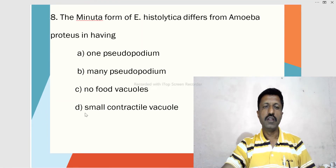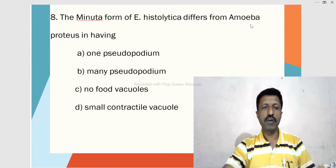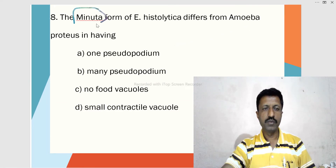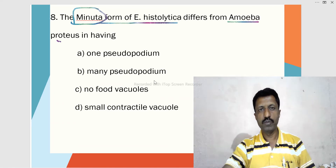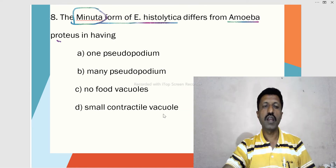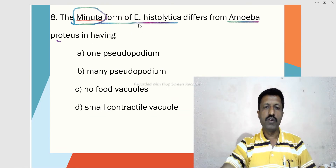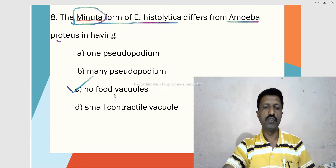Eighth MCQ: The minuta form of Entamoeba histolytica differs from Amoeba proteus in having — A. One pseudopodium, B. Many pseudopodia, C. No food vacuoles, D. Small contractile vacuoles. In the minuta form of Entamoeba histolytica, food vacuoles are absent.